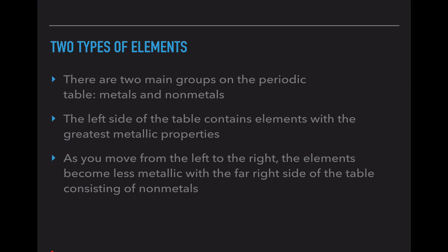The left side of the periodic table holds all of the metals, and they go from the left column across the periodic table all the way to the zig-zag line or the stair-step line. And as you move from the left to the right, the elements become less metallic and the far right side of the table consists strictly of non-metals.